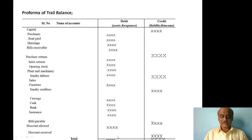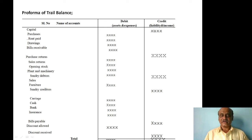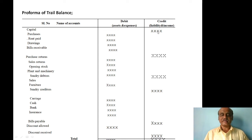We then get the total of the debit column and the total of the credit column. In this way the trial balance is prepared. This is the proforma of the trial balance.